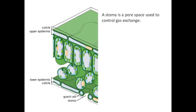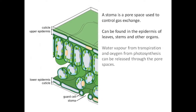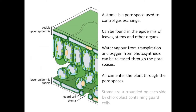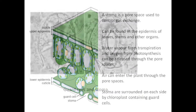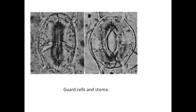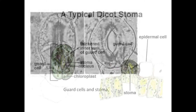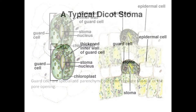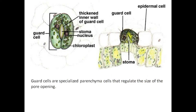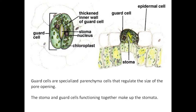A stoma is a pore space used to control gas exchange. It can be found in the epidermis of leaves, stems, and other organs. Water vapor from transpiration and oxygen from photosynthesis can be released through the pore spaces, and air can enter the plant through the pore spaces. Stoma are surrounded on each side by chloroplast-containing guard cells. Guard cells are specialized parenchyma cells that regulate the size of the pore opening. The stoma and guard cells functioning together make up the stomata.